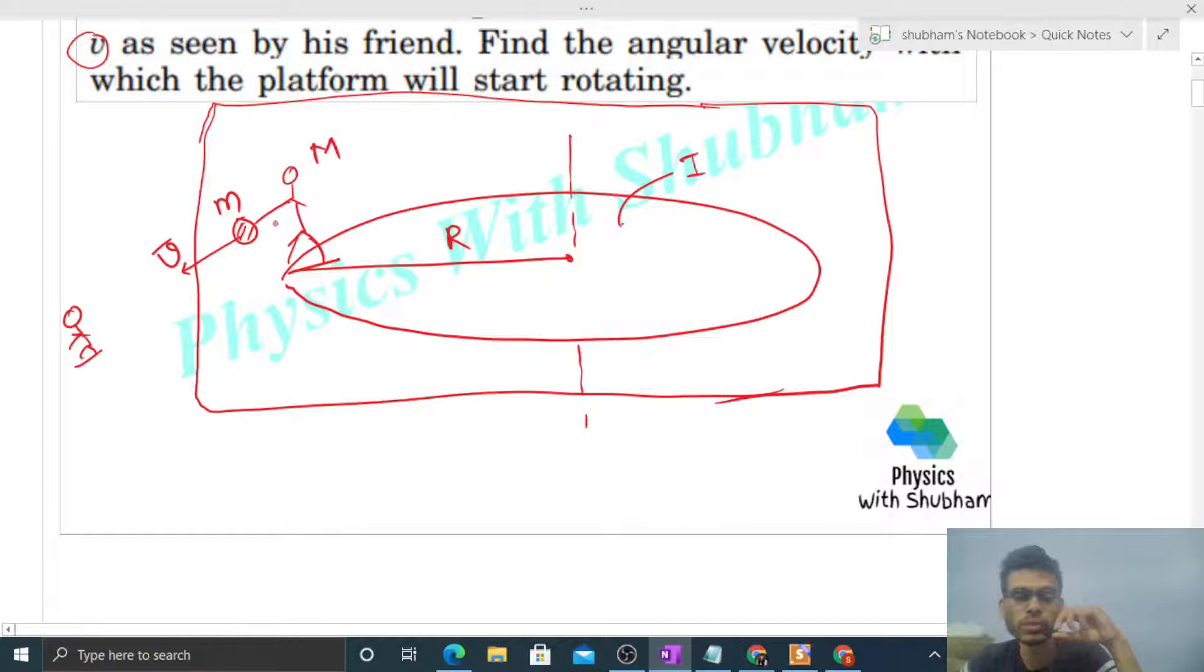Similarly, a force will be applied by the ball on the kid. There will be forces between the ball and the kid. Similarly, friction force will act between this kid and the platform. So the forces that are acting, all of these are internal forces.